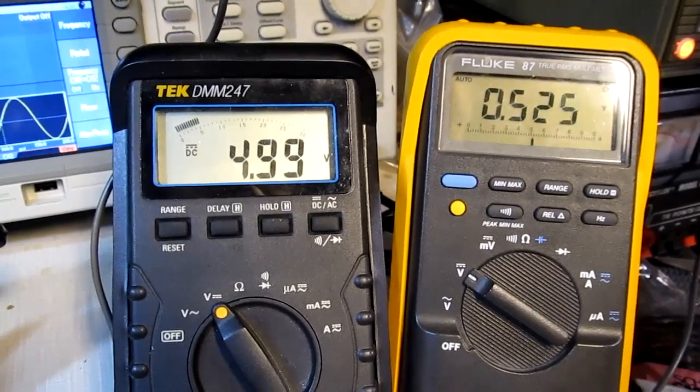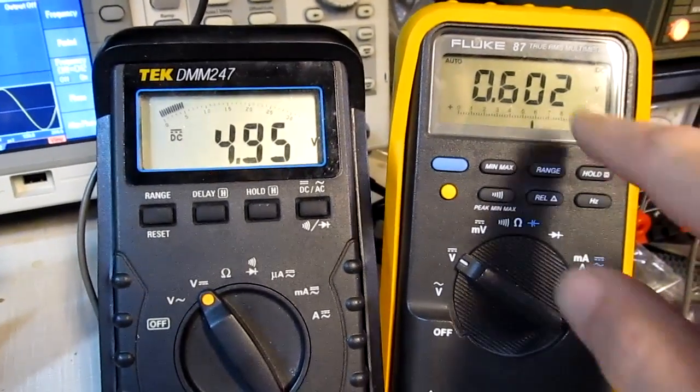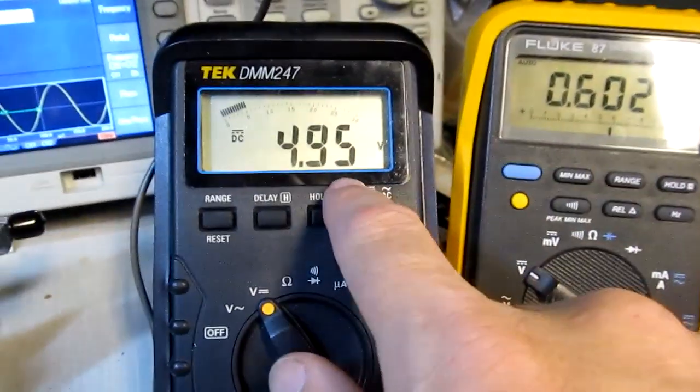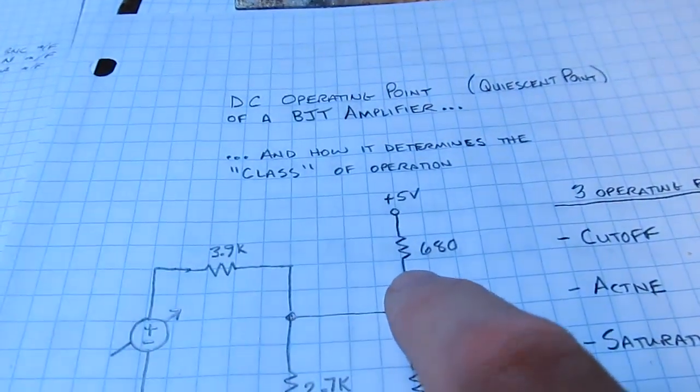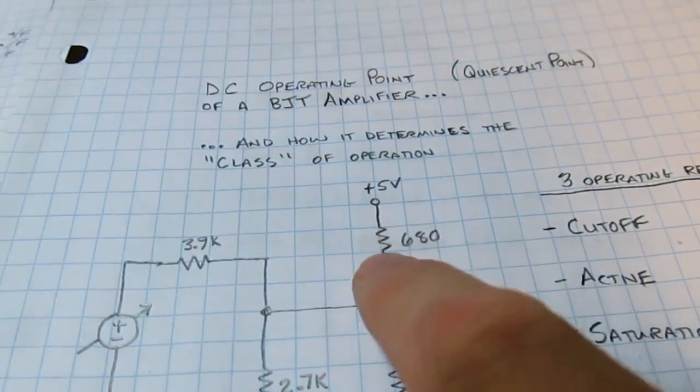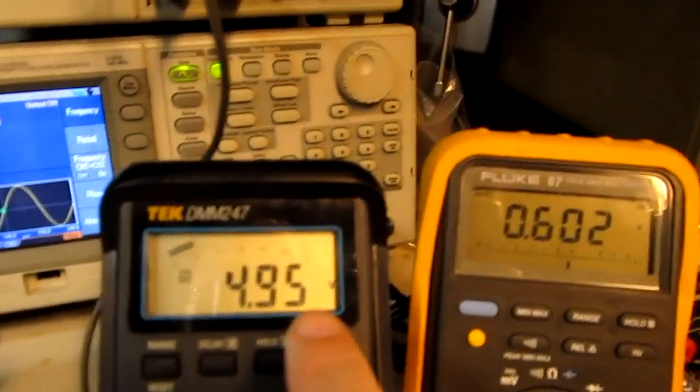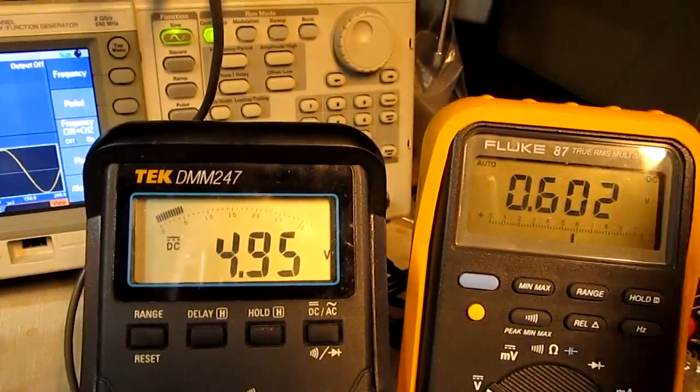I get up near 600 millivolts or so. At about 600 millivolts, I can see that I've dropped just 50 millivolts now on the collector here. So I've got just enough current to drop 50 millivolts across this 680 ohm resistor. I'm just starting to turn that transistor on. That's the beginning of the active region.